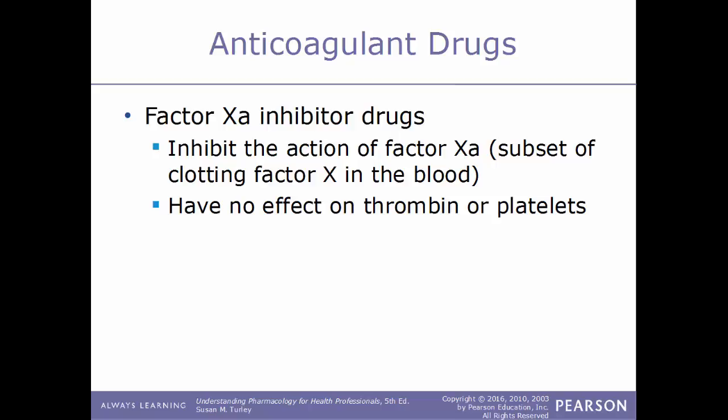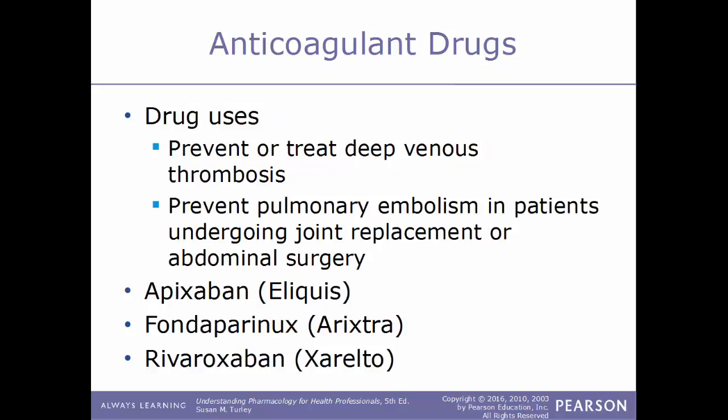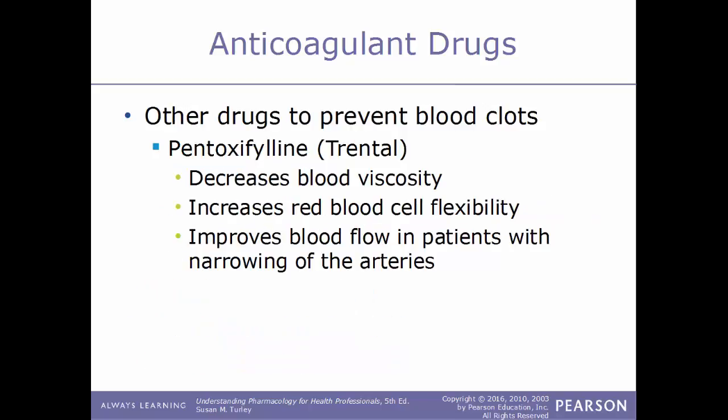Factor Xa inhibitors are also used to treat deep venous thrombosis and can be used to prevent pulmonary embolism in patients undergoing abdominal surgeries or joint replacements. Examples include: apixaban, sold under the trade name Eliquis; fondaparinux, sold under the name Arixtra; and rivaroxaban, sold under the name Xarelto. There are other drugs given to help prevent blood clots, such as pentoxifylline, also known by the trade name Trental. This acts by decreasing blood viscosity, increasing the flexibility of red blood cells, and improving blood flow in patients with narrowing of the arteries.